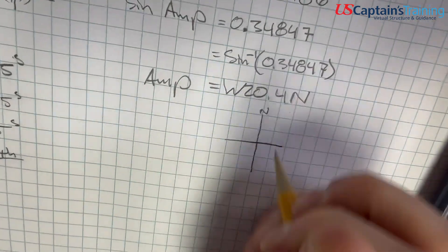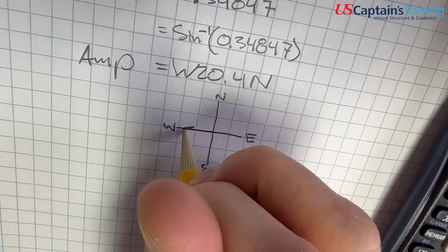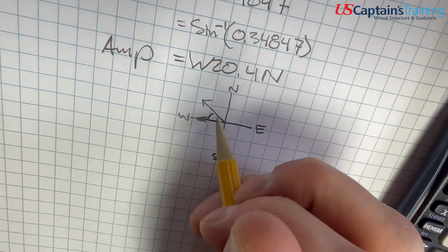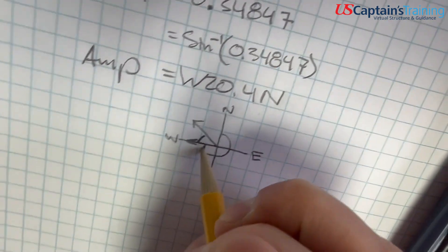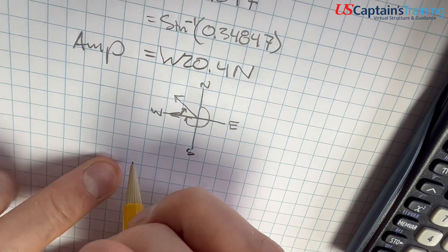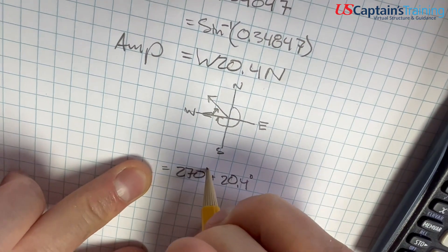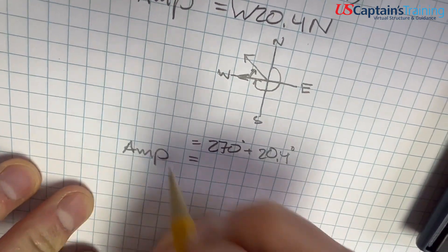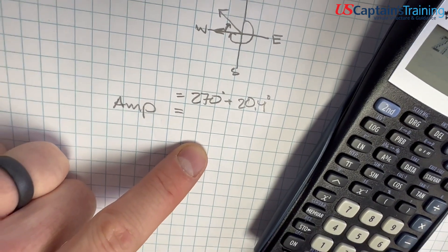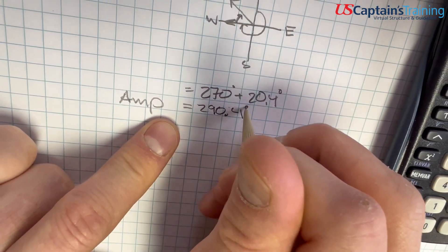So let's graph this out. North, south, east, west. We need to figure out what the amplitude is from north. We were west and then north of west, so we're here. We're somewhere over here. So what we need to do, how far from north are we? We're 270 degrees plus this 20.4. So our amplitude from north is going to equal 270 plus 20.4, which equals 290.4 degrees true.